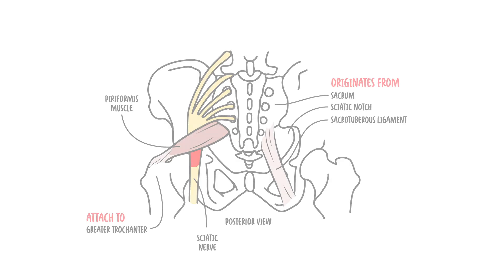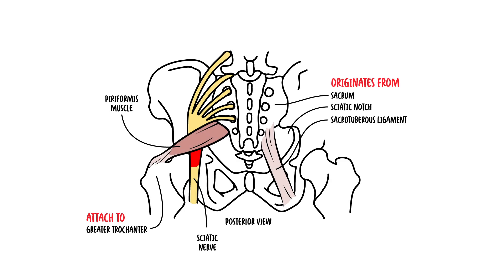In summary, piriformis syndrome is caused by irritation or compression of the sciatic nerve at the piriformis muscle. The syndrome is characterized by tingling, numbness and pain along the path of the sciatic nerve in the affected leg — similar symptoms to sciatica.